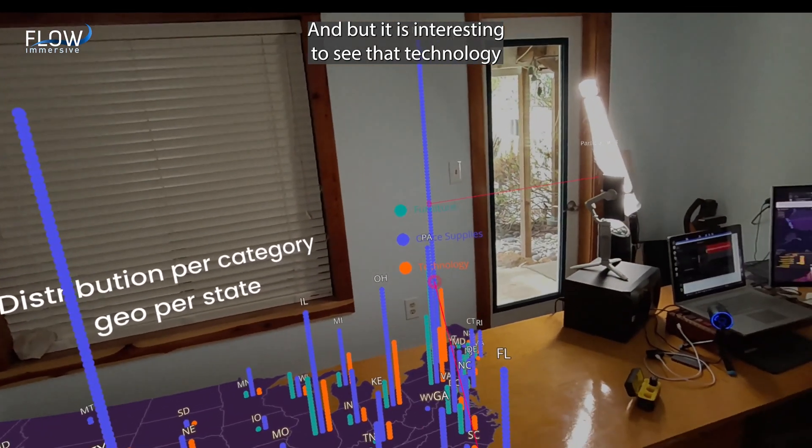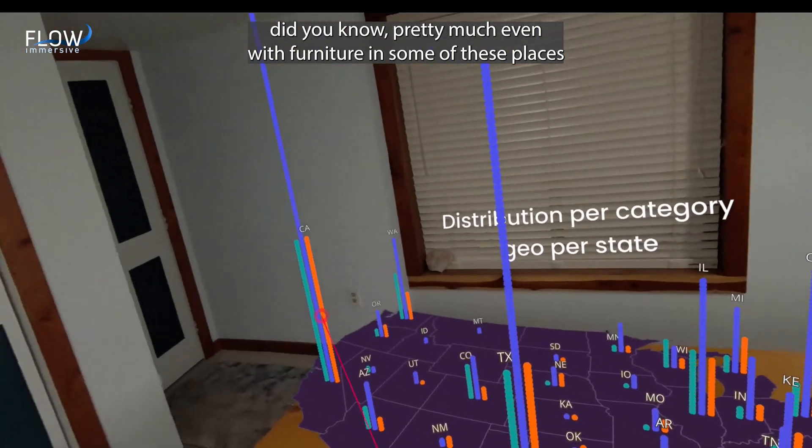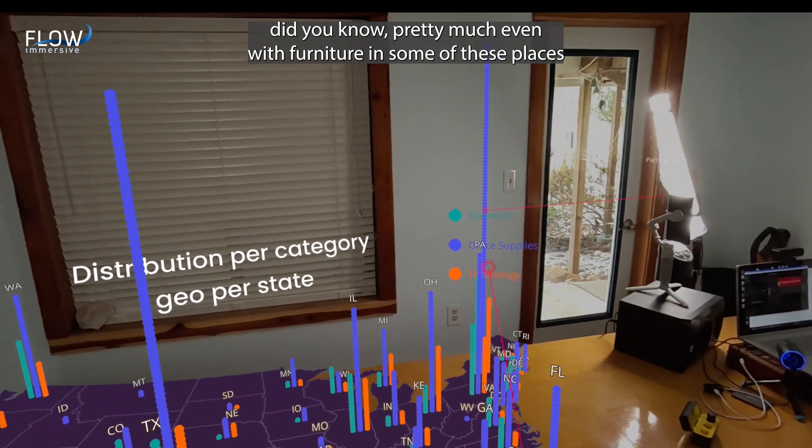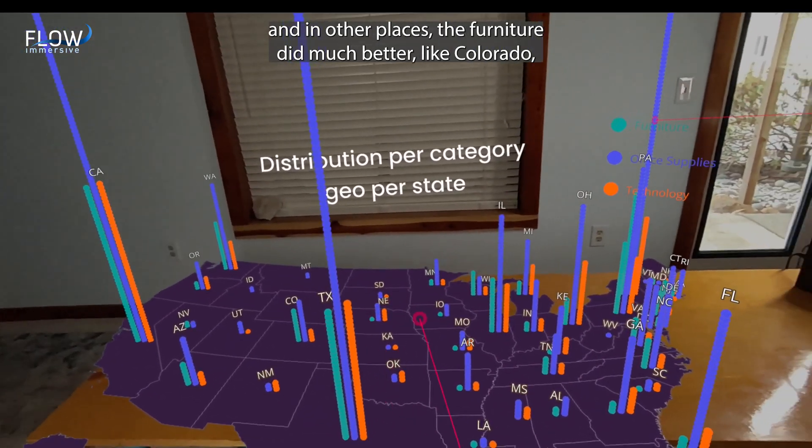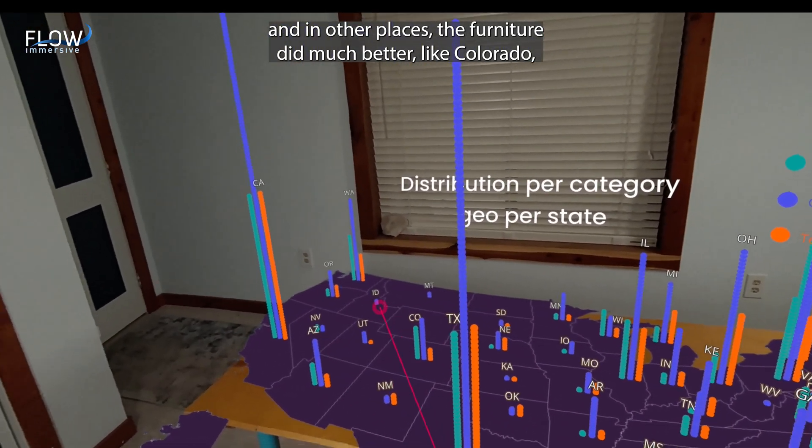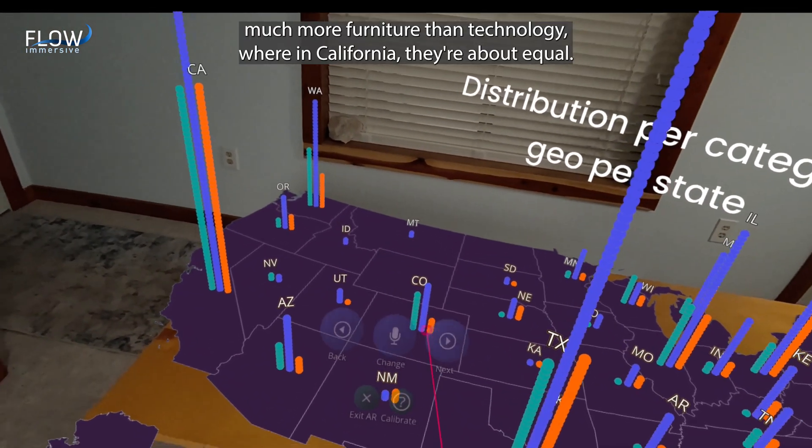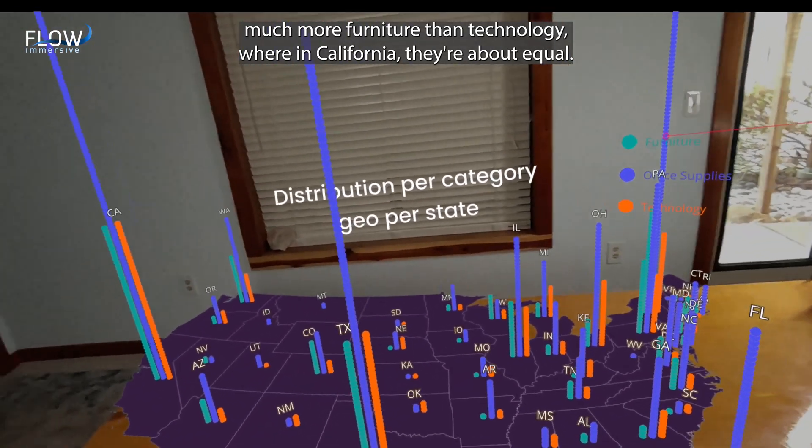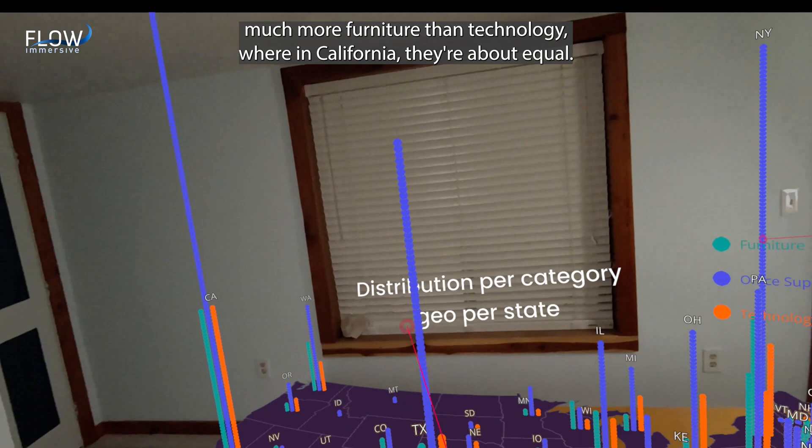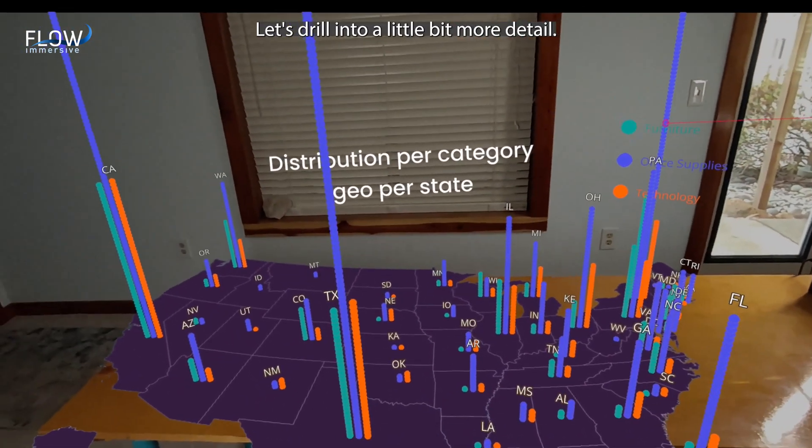But it is interesting to see that technology did pretty much even with furniture in some of these places. And in other places, the furniture did much better. Like Colorado, much more furniture than technology. Where in California, they're about equal. Let's drill into a little bit more detail.